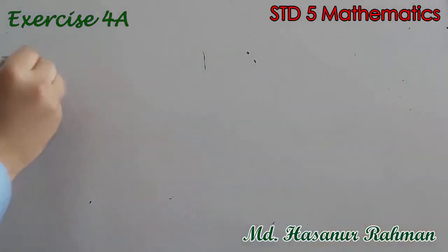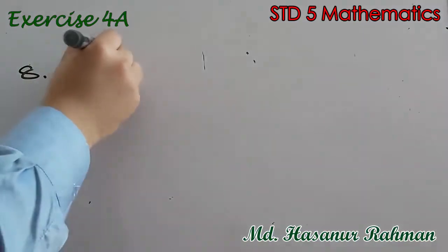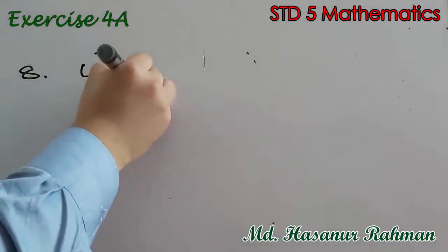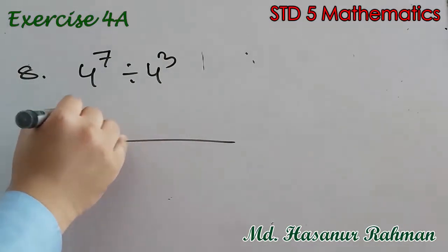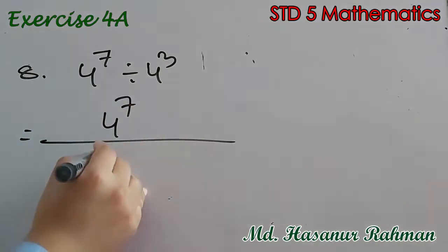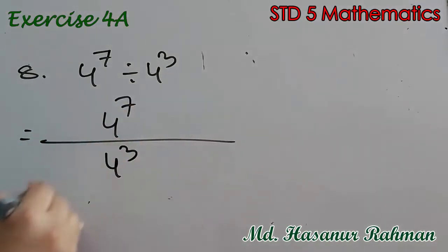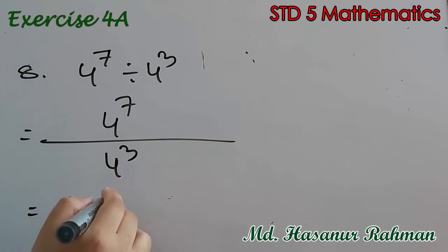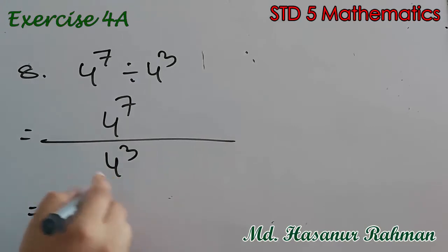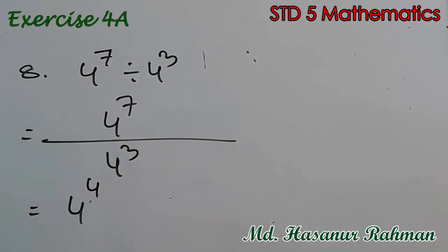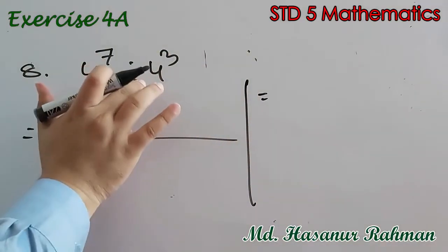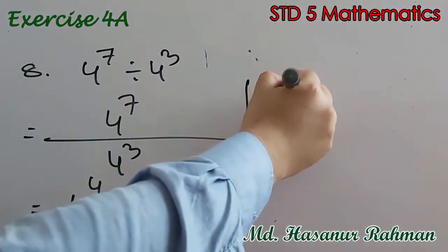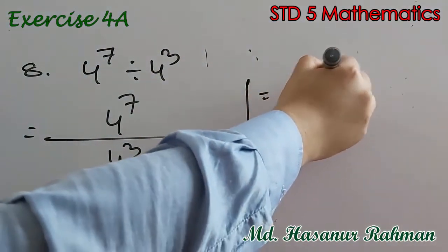Now number 8 says 4 to the power 10 divided by 4 to the power 7, divided by 4 cubed. You can solve it as 4 to the power 7 by 4 cubed, that means 4 to the power 7 minus 3, that is 4 to the power 4. Or you can solve it by subtracting the powers when there is a division sign.